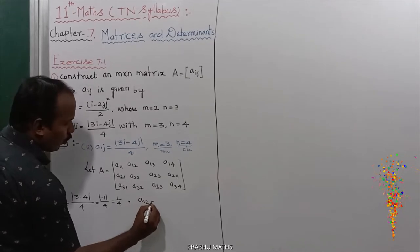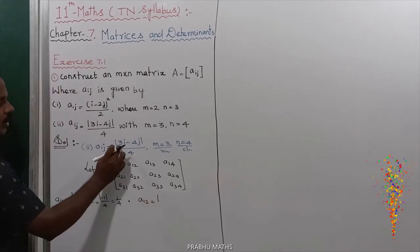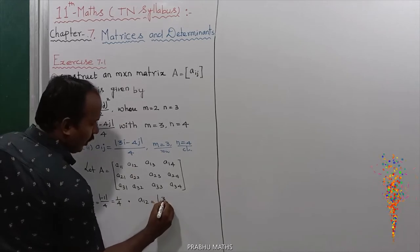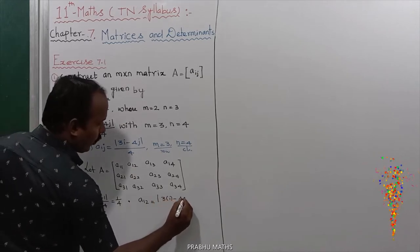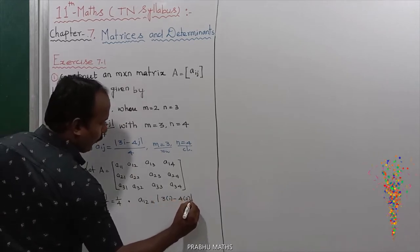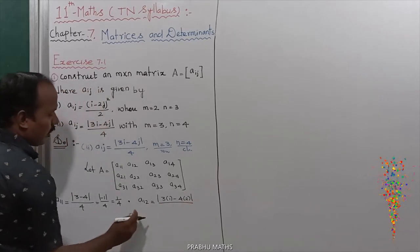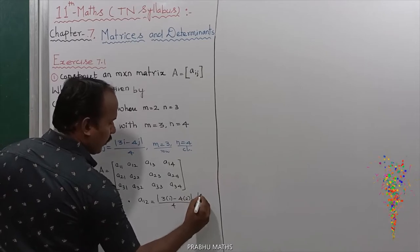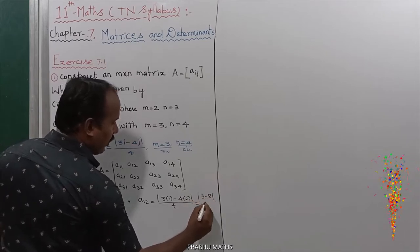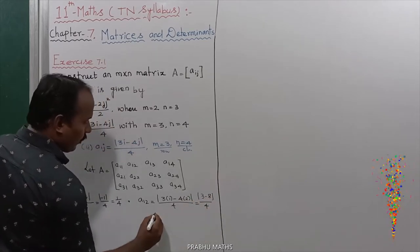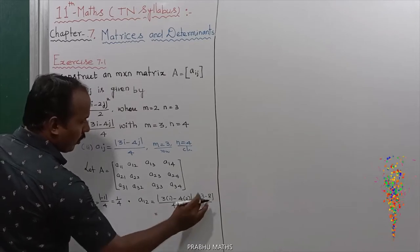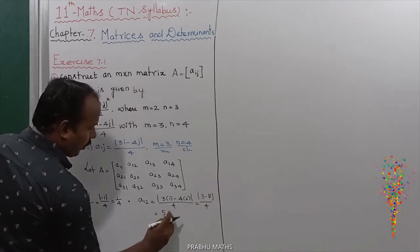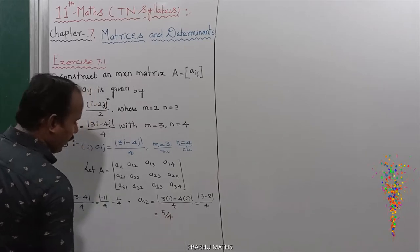Next, A12 equals the modulus of 3 times 1 minus 4 times 2, whole divided by 4. That is the modulus of 3 minus 8, divided by 4, which is modulus of minus 5 divided by 4. So A12 equals 5 by 4.